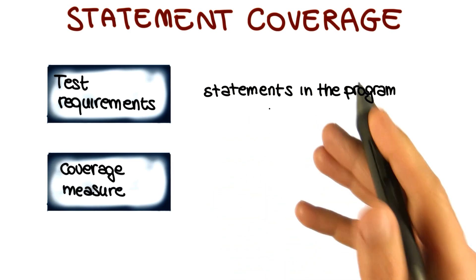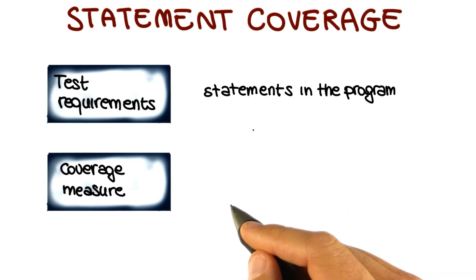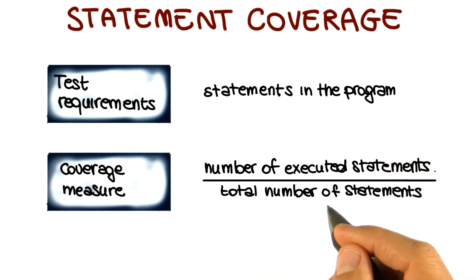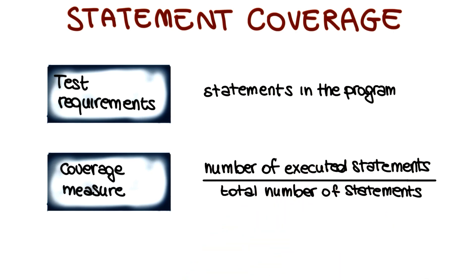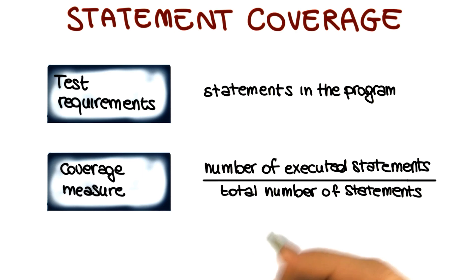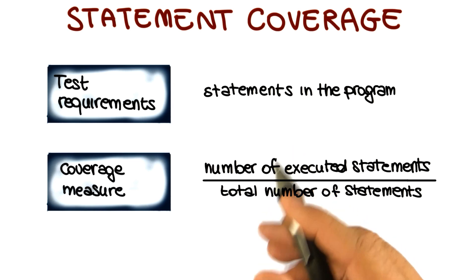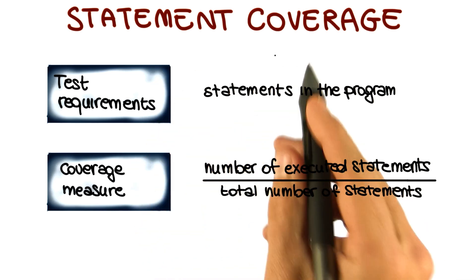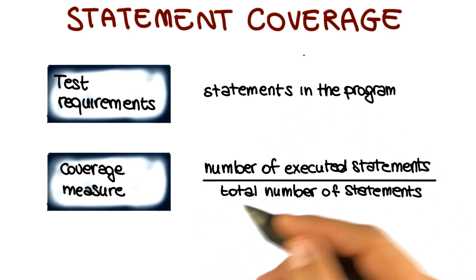If there is a statement that is faulty in the code, we need to exercise it in order to find a fault. Therefore, a good measure of how well we exercise the code is the ratio of the number of executed statements to the total number of statements in the program. The higher this number, the better we exercise the code. Statement coverage is satisfied when all the statements in the program have been executed, and we can satisfy it to different degrees.